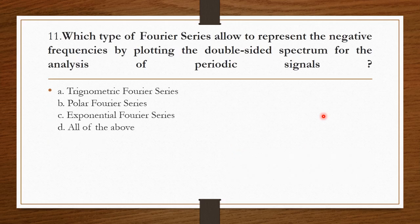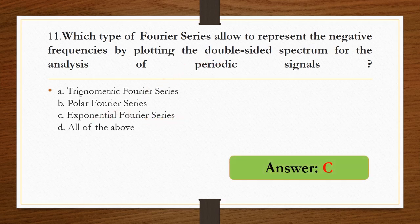Which type of Fourier series allows representing negative frequencies by plotting the double-sided spectrum for the analysis of periodic signals? The double-sided spectrum corresponds to the exponential Fourier series. So option C is the right answer.